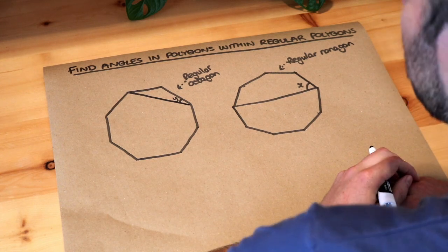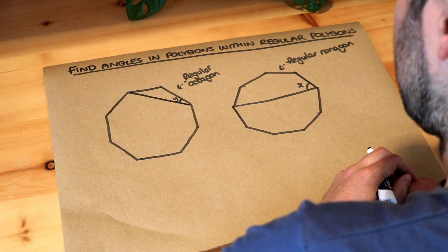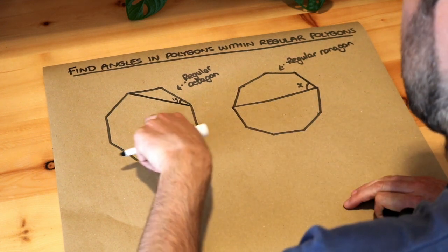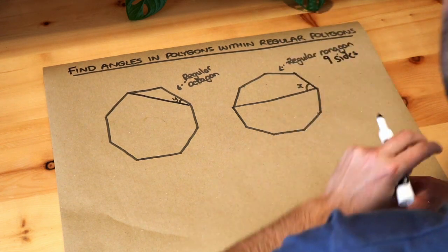Hello and welcome to this Dr. Frost video on finding angles in polygons within regular polygons. We've got a regular octagon here for example and a regular nonagon that's nine sides. A nonagon is a nine-sided polygon.